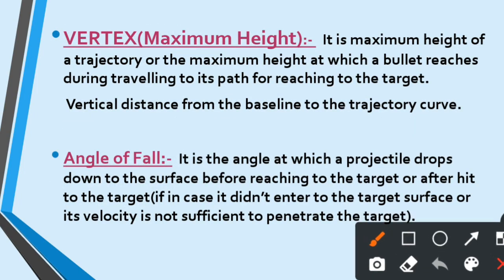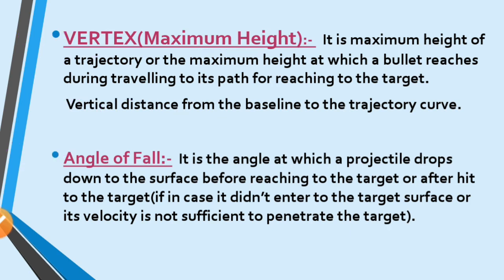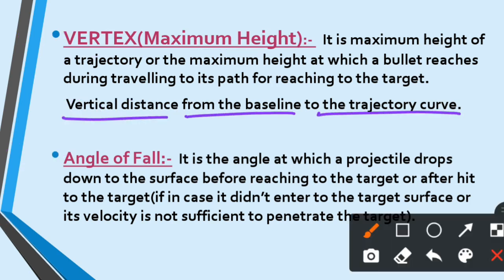Here we have two points — the vertex and the angle of fall. The vertex: the third part graph explained this, but here is the proper definition. The vertex is the maximum height. Suppose this is the horizontal baseline — the vertex is the maximum vertical distance from the baseline to the trajectory curve. It is the maximum height of a trajectory, or the maximum height at which a bullet reaches during travelling its path to reach the target.